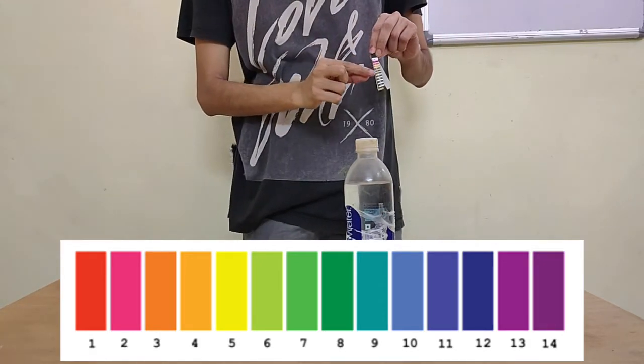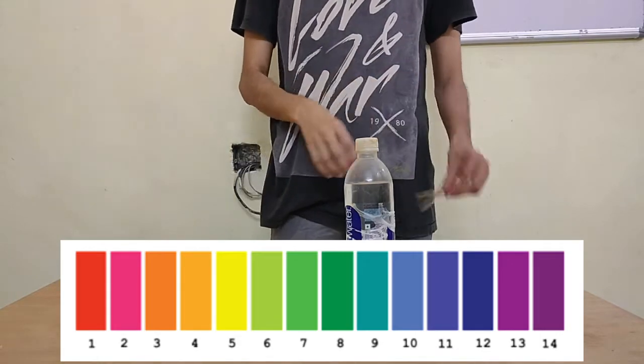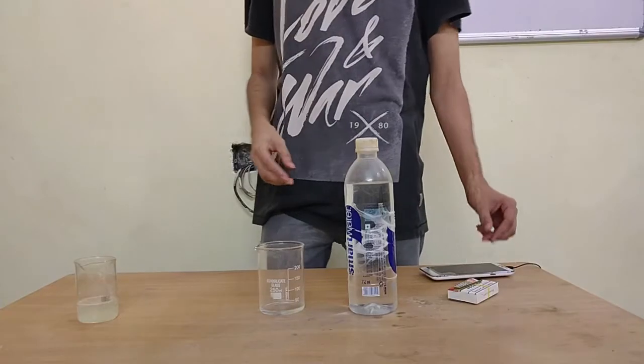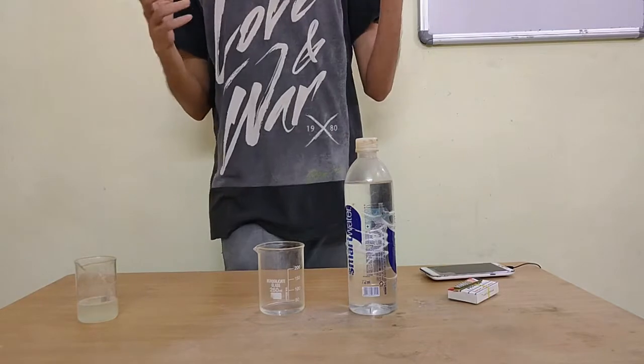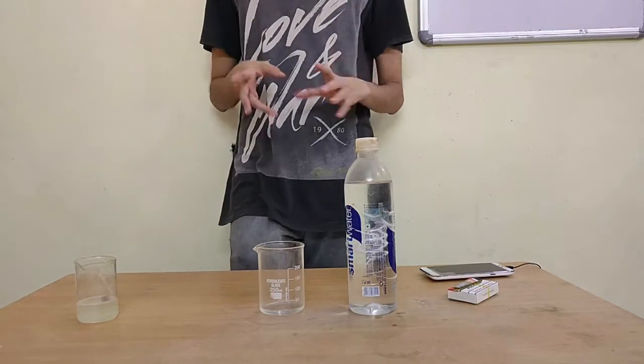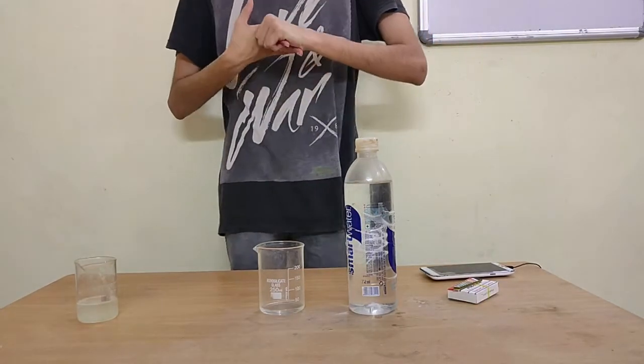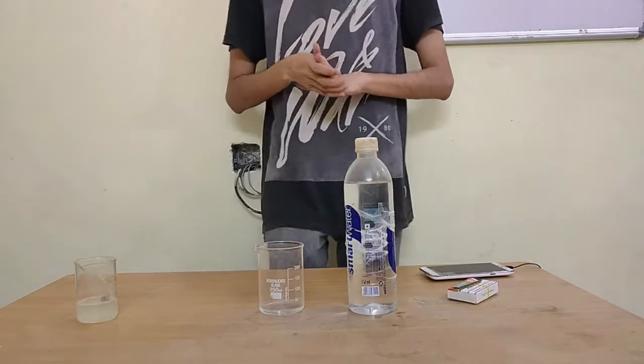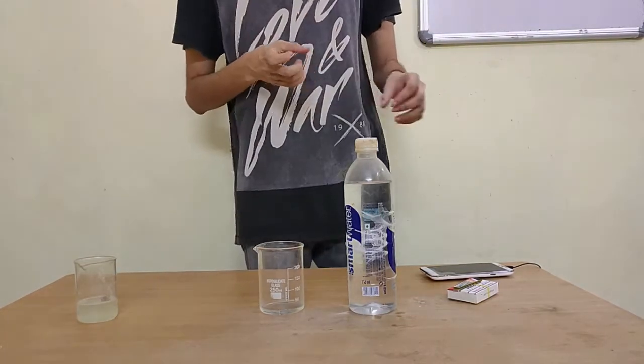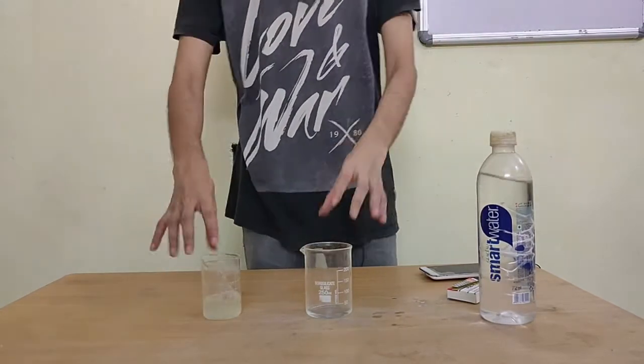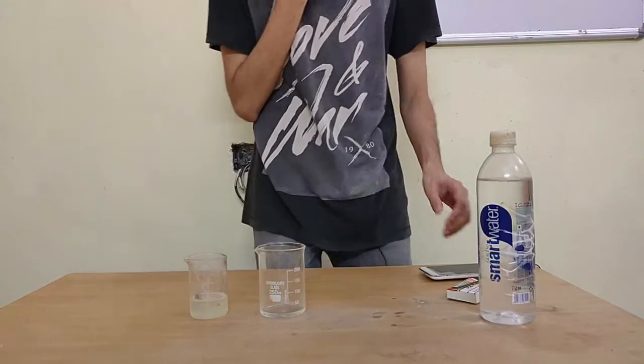When we did indicators, I mentioned we'd look at something called a universal indicator or pH indicator later—this is exactly that. We're going to see how pH works. I have two samples here: this clear liquid and this kind of clear liquid. I'll tell you what they are in a while.